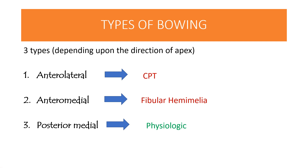There are three types of bowing deformity: anterior-lateral, anterior-medial, and posterior-medial. These are classified on the basis of the apex direction of the bowing. If the apex is directed anteriorly and laterally, it is called anterior-lateral bowing, which is a feature of congenital pseudarthrosis of the tibia. Anterior-medial bowing is a feature of fibular hemimelia, whereas the majority of posterior-medial bowings are physiologic.